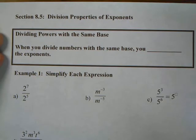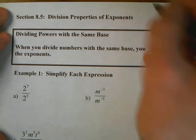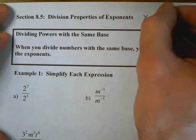This is section 8.5, Division Properties of Exponents. In the previous section, we talked about multiplying properties of exponents. Let's review that idea first, and we'll understand the correlation.